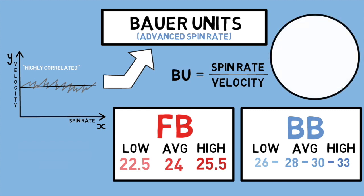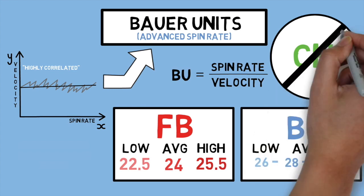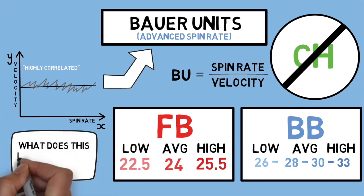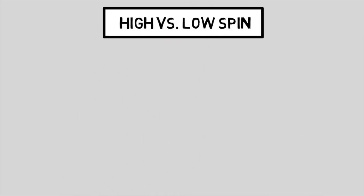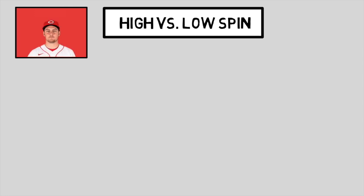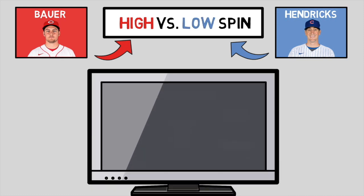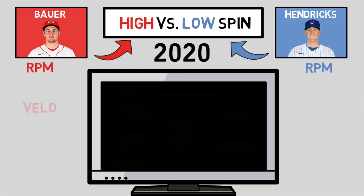You may notice that we didn't cover change-ups here, and that's for a reason. Spin rate doesn't play as big of a role in determining the effectiveness of this pitch type — people throw high spin rate change-ups and splitters with just a few hundred RPMs with the same success. The range would just be too large to be beneficial for our analysis. So now, for the moment we've all been waiting for: how does this actually look on the field? Let's start by taking a look at our two pitchers' arsenals through the lens of spin rate. For each, we will specifically be looking at their average fastball spin rate, fastball velocity, and then calculate their Bauer units.